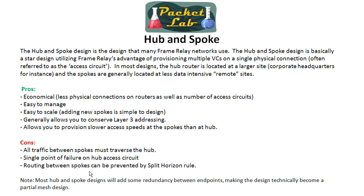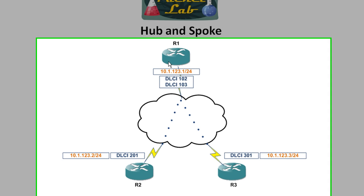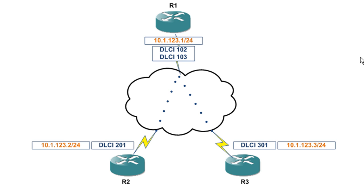We'll get into this in a lot more detail when we start talking about how different routing protocols work with hub and spoke frame relay networks. But let's look at a simpler topology — we're only going to have three routers here, but still a hub and spoke. Here's our hub and here are our two spokes. What split horizon does is it says basically...